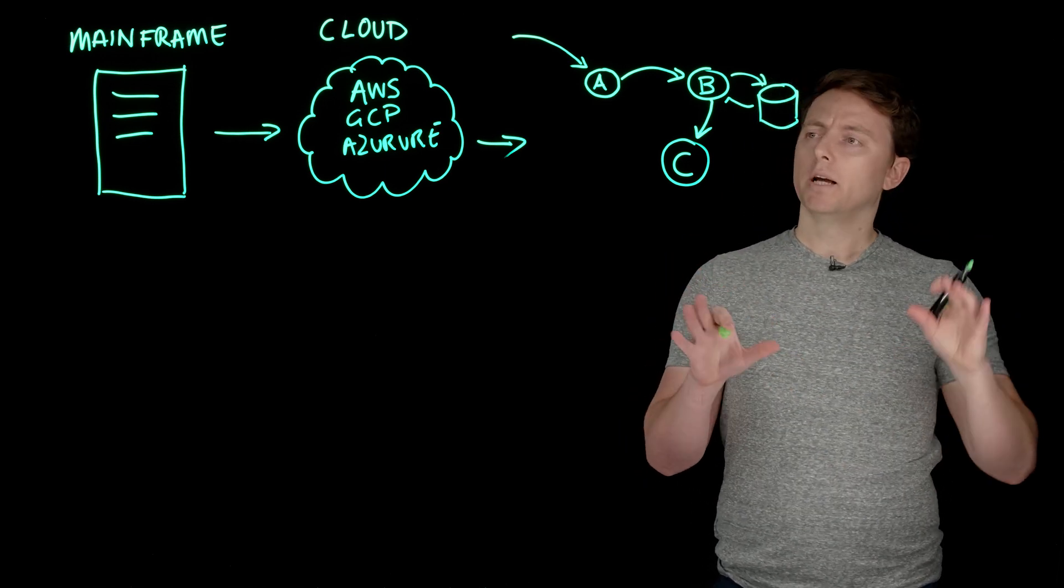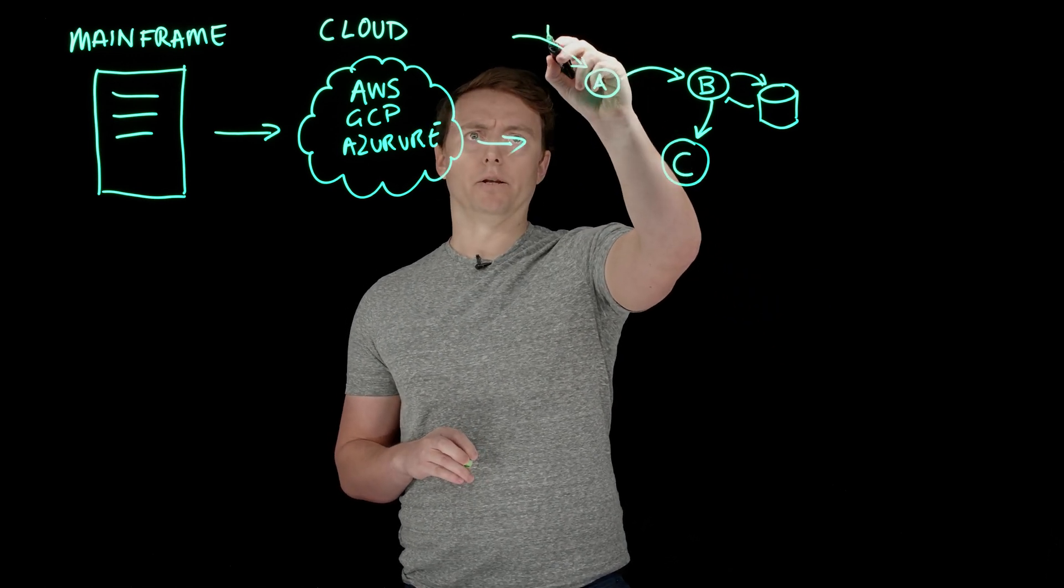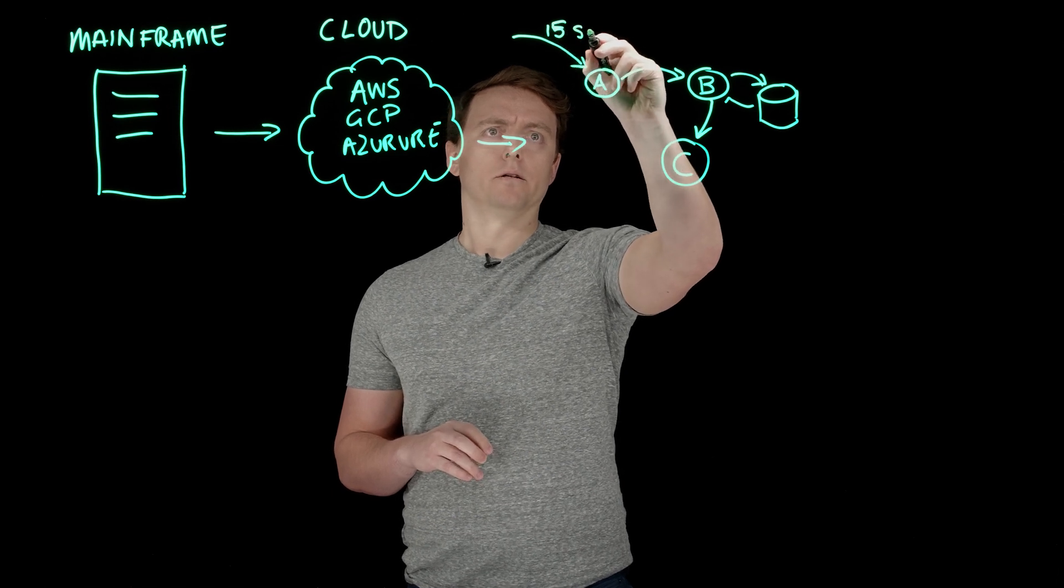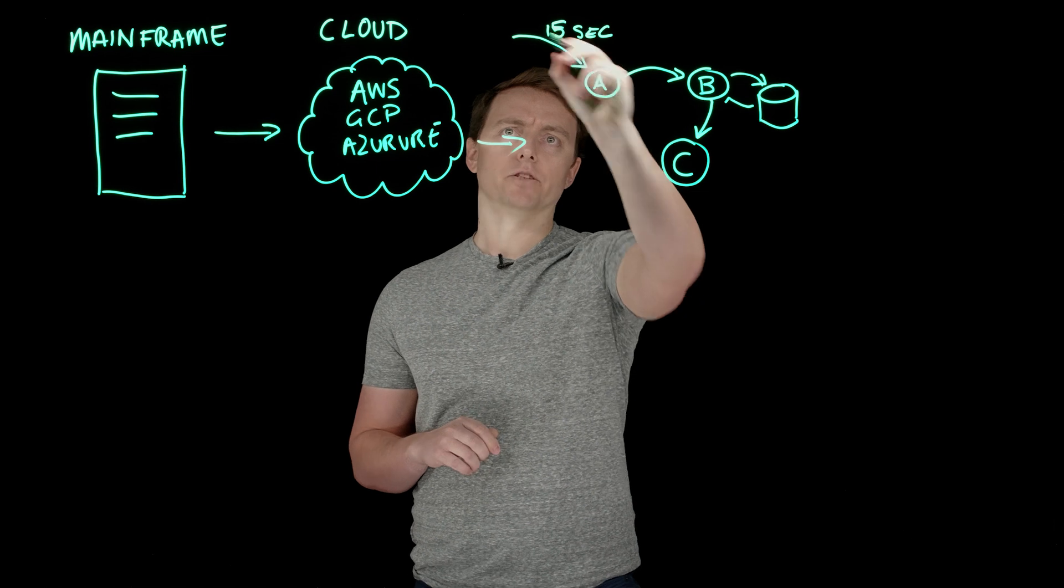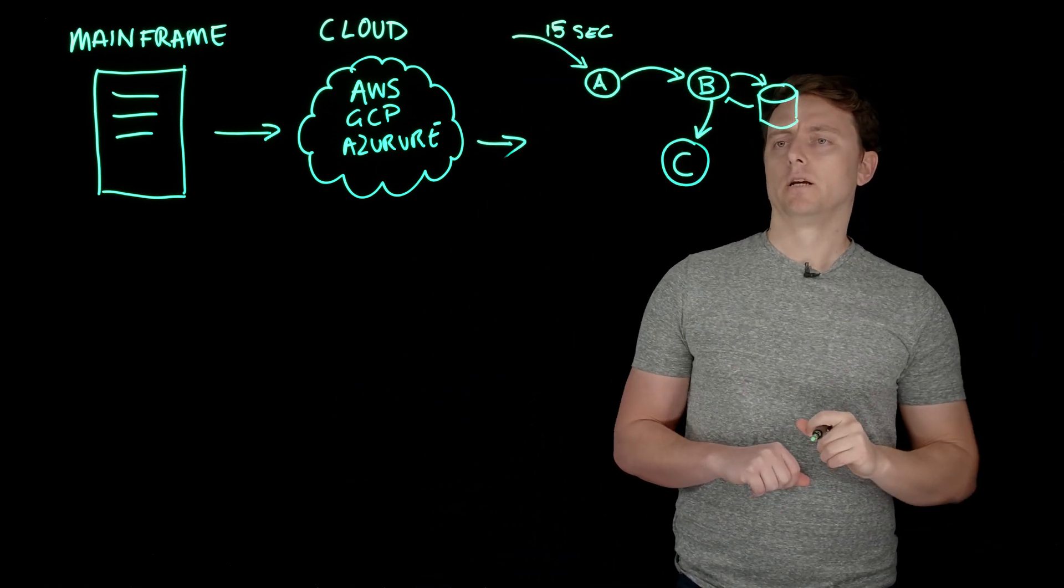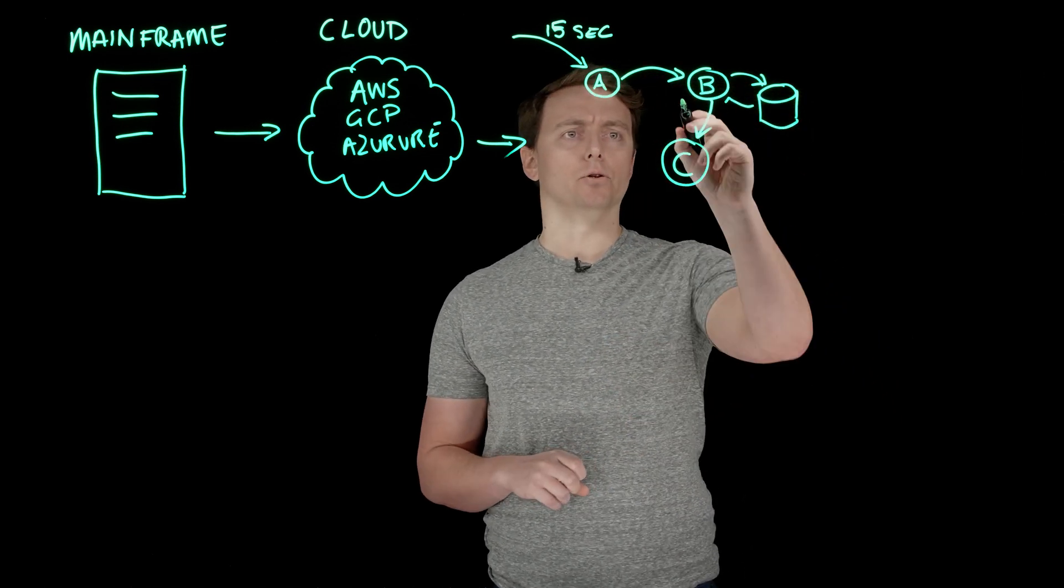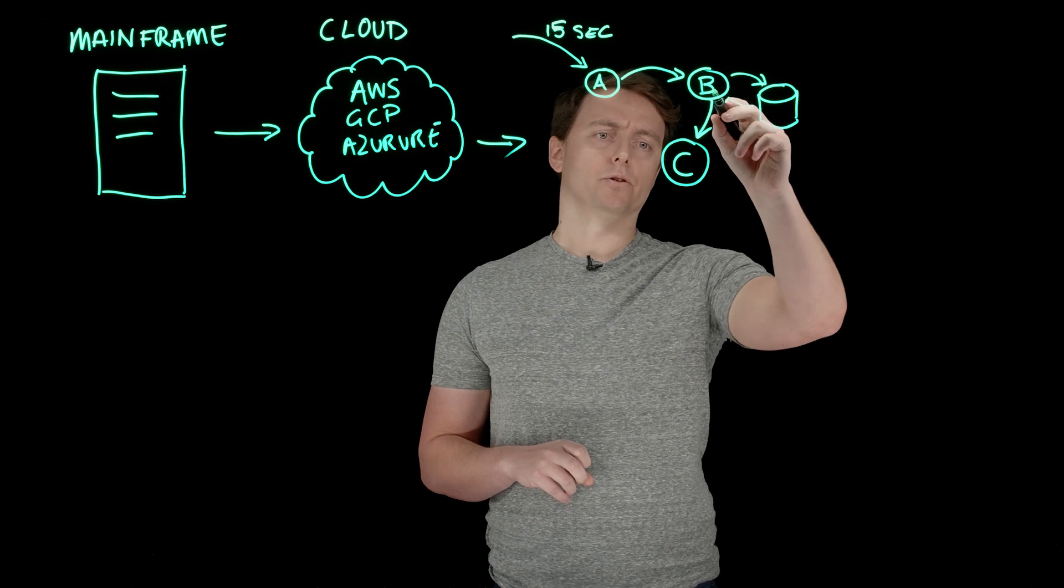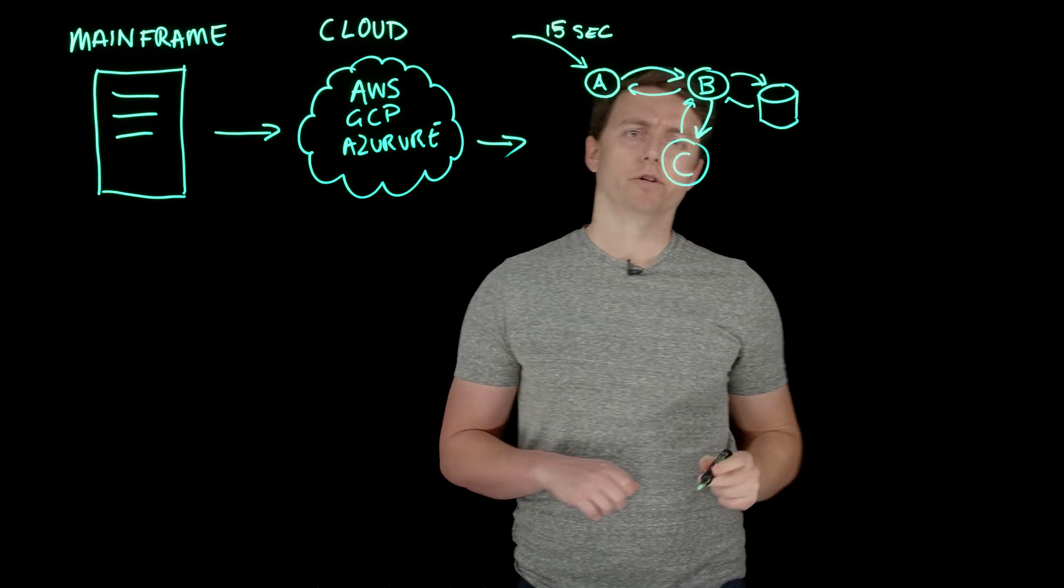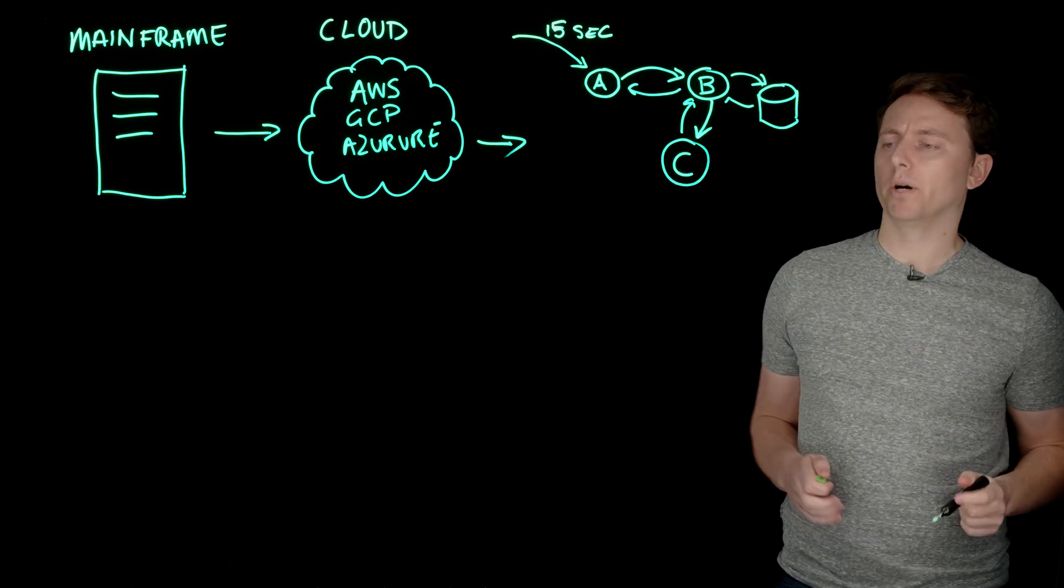Let's say a request is coming in from the internet and you require the response from service A to come back to the caller in around 15 seconds. What this means is that service A needs to call service B, which needs to call service C, and all of this needs to happen synchronously and respond to the user within that time budget.